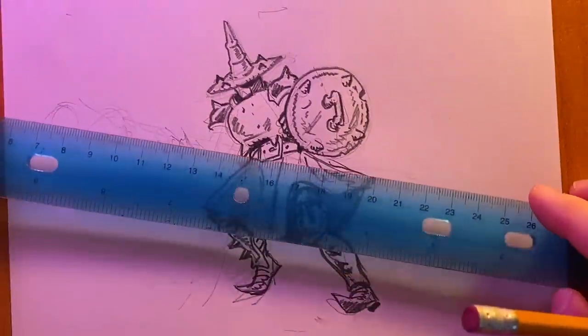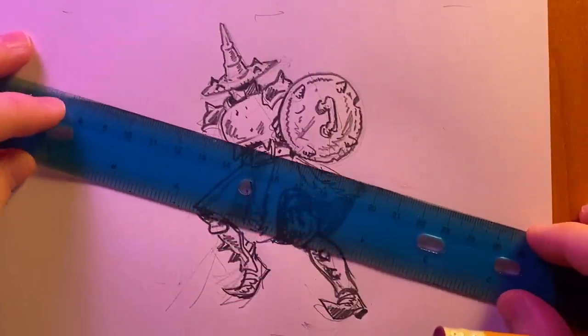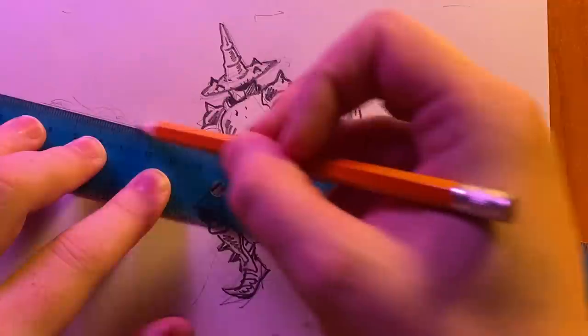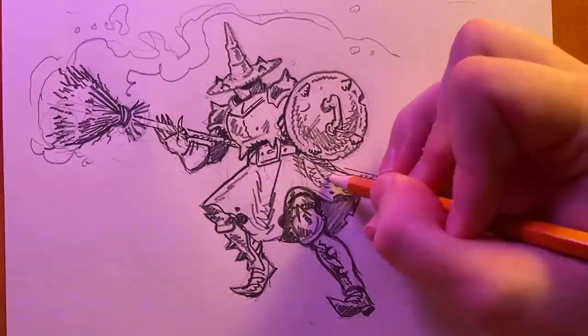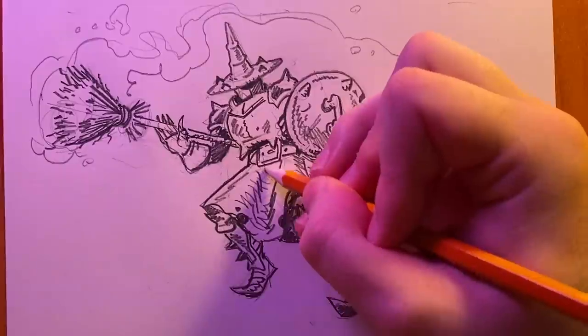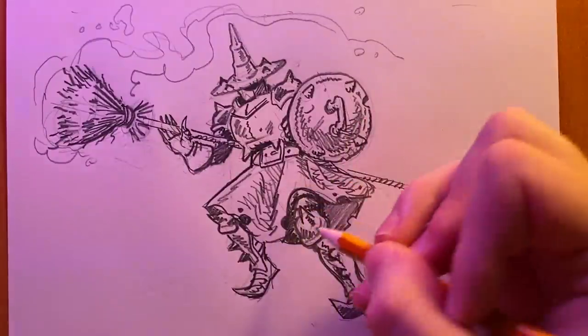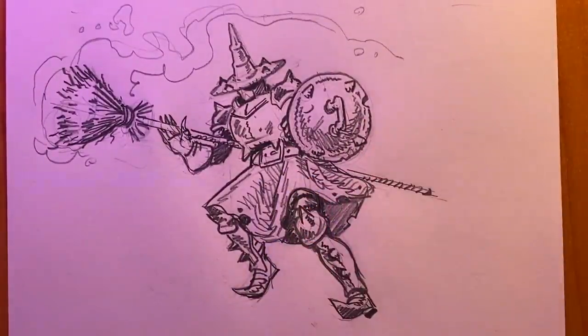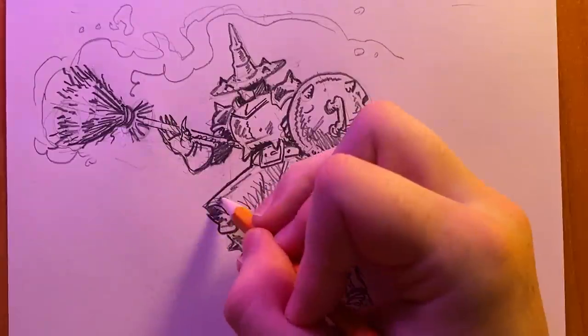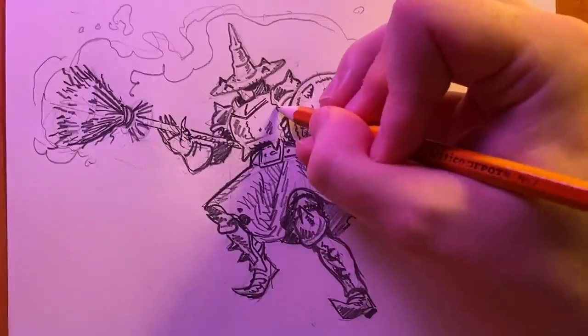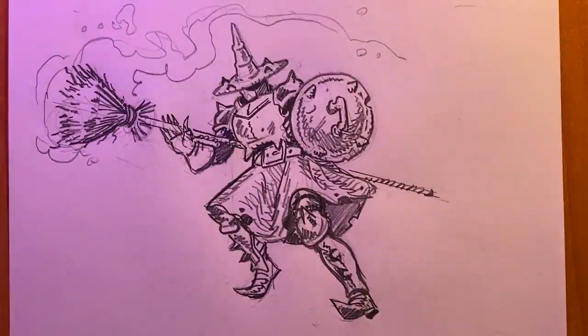I try to avoid using straight edges whenever possible but when you're doing weapons and swords it's always a good idea to take out your ruler and just get it right the first time. Once all the major details are laid in it's time to balance out the values and make sure everything's reading properly. You can erase and redraw things if you need to at this point or add little greebly bits or extra details to make sure the emphasis is going to the right places, but really if you balance your values properly it's probably ready to call it quits.